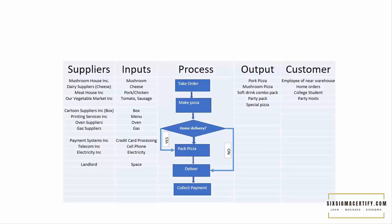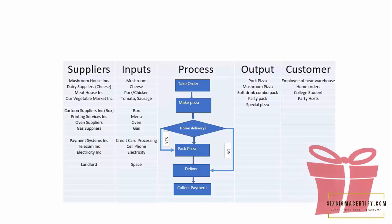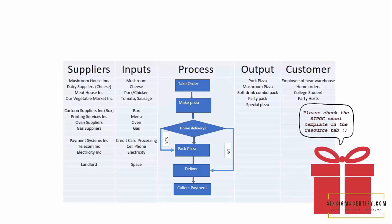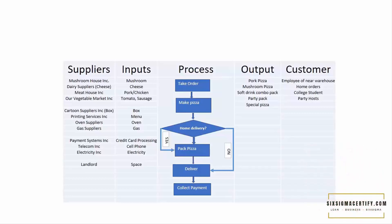The outputs are the different types of pizza according to the customer's expectations or the voice of customers — there might be pork pizza, mushroom pizza, soft drink combo pack, party pack, or special pizza. You may have different kinds of customers: employees of a nearby warehouse, home delivery customers via online, college students, or party hosts. So there can be different customers. This in general gives us a helicopter view of the process — this is not a detailed view. If you want to go into the detailed view, you have to draw the process map. The value stream map gives you a detailed picture of all the individual processes, different stocks, amounts, and functions of the people. SIPOC is a more general, helicopter view of the process.